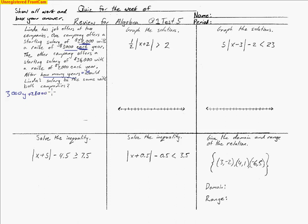That's the $28,000 salary we start off with and the $3,000 raise each year. The next company offers $36,000 to start, but only gives a raise of $2,000 each year — a smaller rate of increase. The question asks after how many years will you make the same with both companies. That's where the equal sign comes in, so now we're ready to solve.